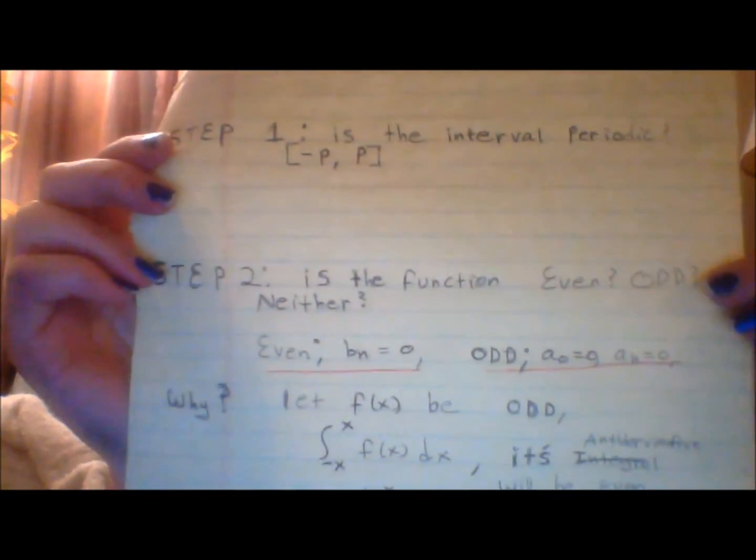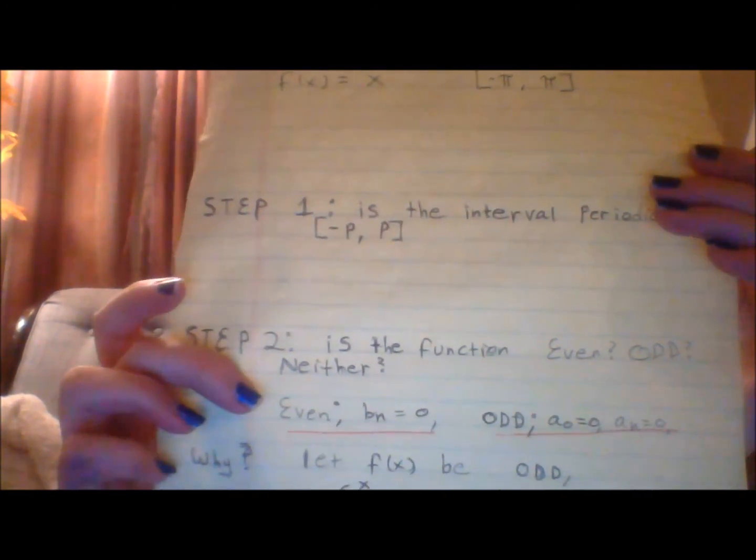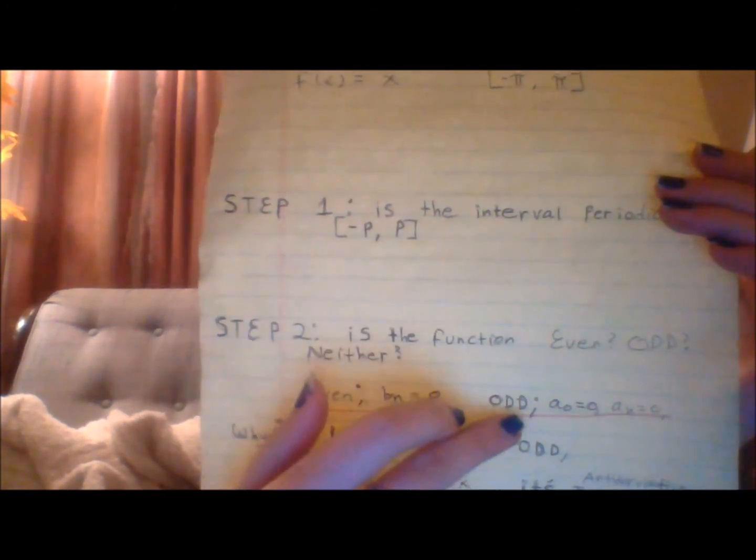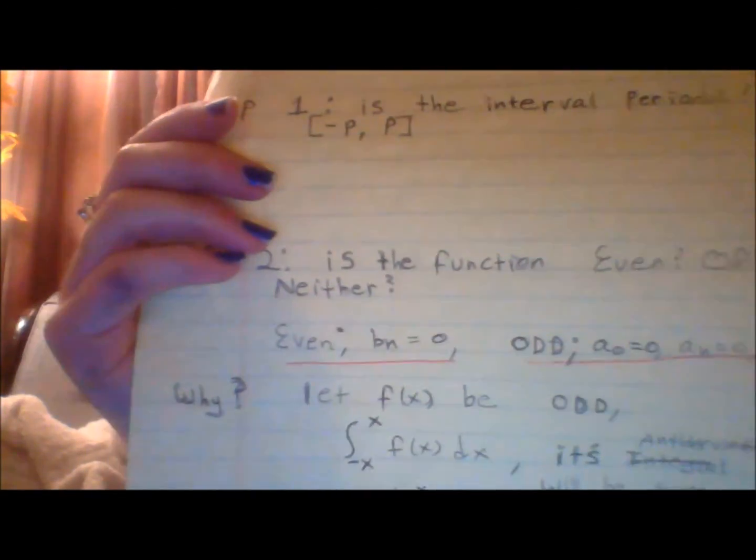Step two is to check if the function is even or odd. This is super important, because if the function is even, b sub n is going to be 0. If the function is odd, a naught and a sub n are going to be 0.